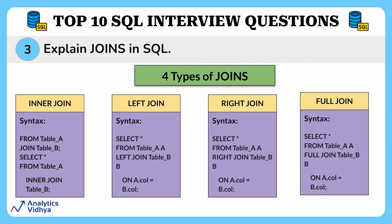There are four types of joins in SQL: inner join, full join, left join, and right join. Inner join returns all the rows from multiple tables when the join condition is satisfied. In a left join, only rows from the left table are returned along with the union of left and right tables where the condition is satisfied. In a right join, all rows from the right table are returned, but only the matching rows from the left table where the join condition is fulfilled. In a full join, all records are returned when there is a match in any of the tables — it returns all rows from both the left and right sides.